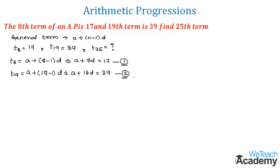Now let us solve both equations. Let us subtract equation 1 from equation 2. First we have equation 2 as a plus 18d equals 39. Then we have equation 1 as a plus 7d equals 17.